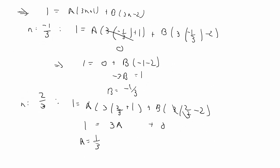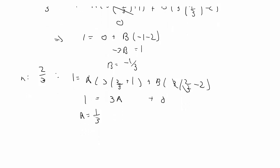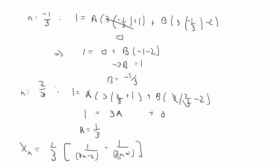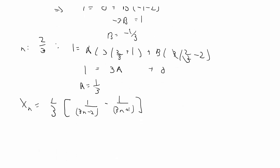Now let's rewrite Xn as the partial fractions. Let's pull out the 1/3 for both. So we have 1/3 times [1 over (3n minus 2) minus 1 over (3n plus 1)]. And now that we've rewritten it, we do see that it does look like it is a telescoping series.